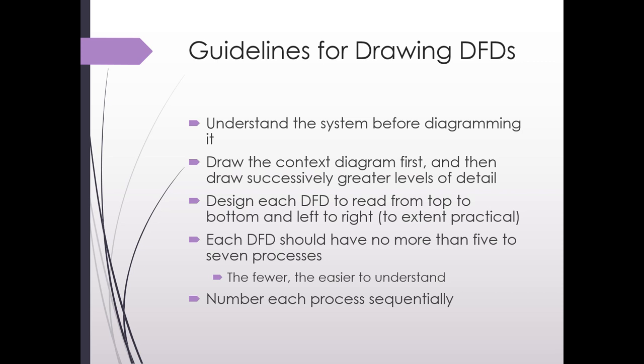The design should read from top to bottom and left to right as much as possible. One thing you want to avoid is arrows going all over the place, so try to make it as practical as you can — you can move things around if needed. You shouldn't have more than five processes in each diagram; five is really about the maximum, and the fewer the better for understandability. Number each of the processes sequentially, especially if there is a particular order to them.